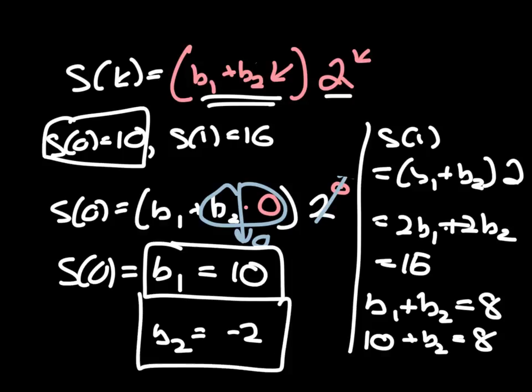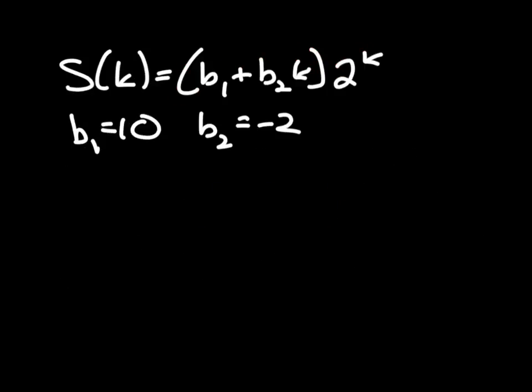So now we can put our pieces together here, and let's do that on the next slide. So we found that using the skeleton framework here, which again is different than what we saw in the previous video because we had a repeated root this time, we were still able to, using that skeleton framework, use the initial conditions to find these two values of b.